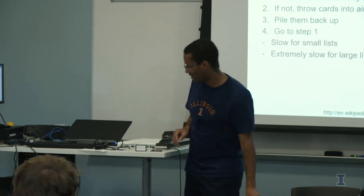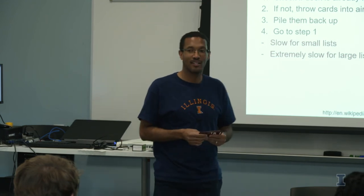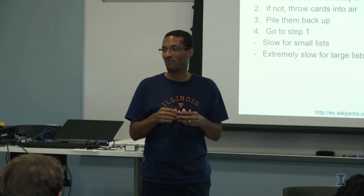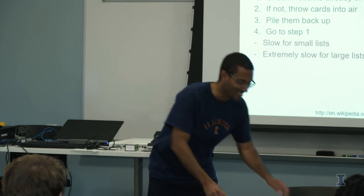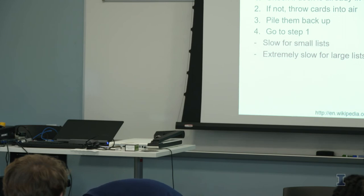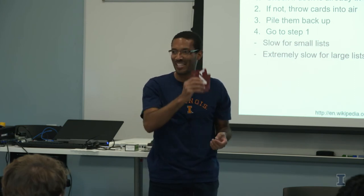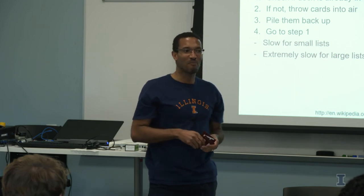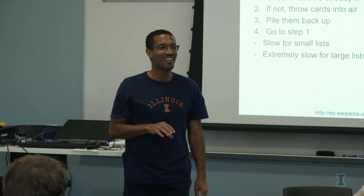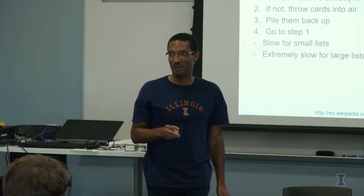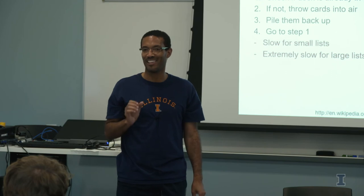Now let's talk about a really bad algorithm called bogosort. In bogosort, you check to see if the list is in the correct order. If not, you throw the cards up in the air, catch them, rearrange them — shuffle the cards — and ask: is this now in the right order? No. Throw them again. This algorithm takes n-factorial steps: five objects means 120 steps, six objects means 720 steps. Actually it scales as n times n-factorial divided by 2, so badly that you never want to do this.